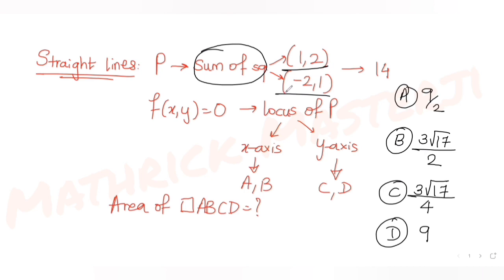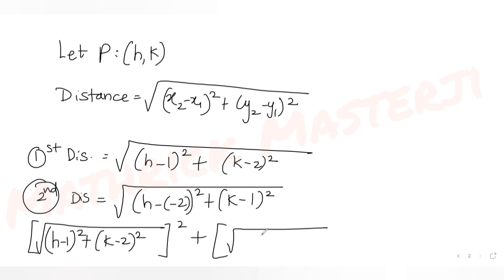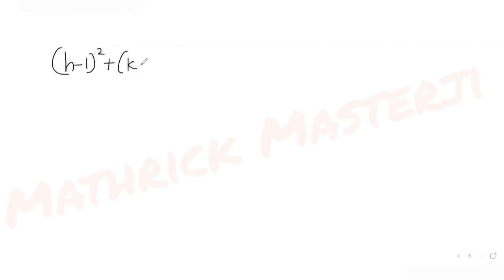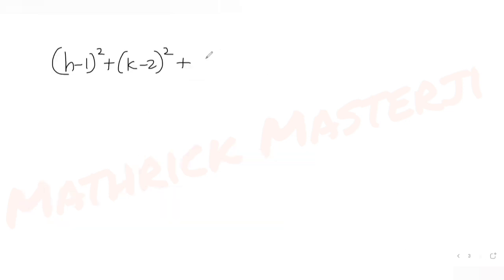The question tells us to equate the sum of the squares of these distances to 14. Squaring each distance and adding them: (h-1)² + (k-2)² + (h+2)² + (k-1)² = 14. The square roots cancel when we square, giving us this expanded equation equal to 14.